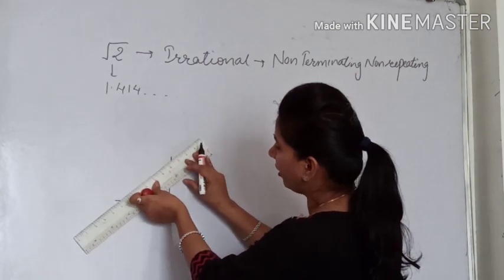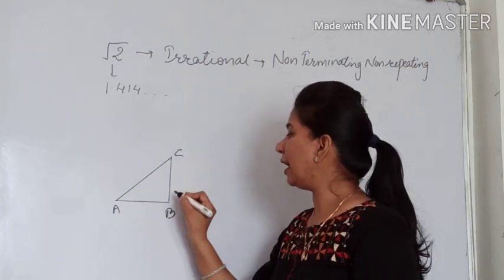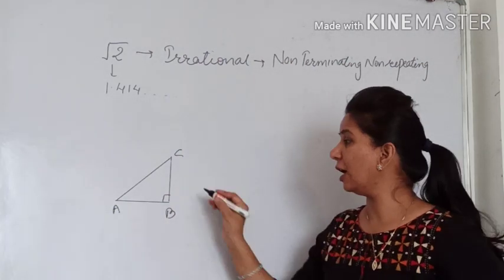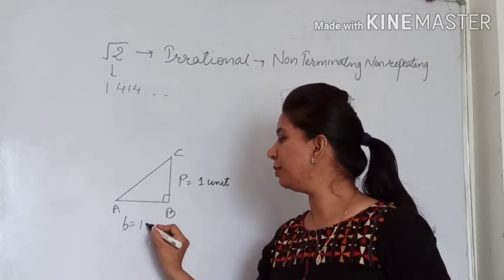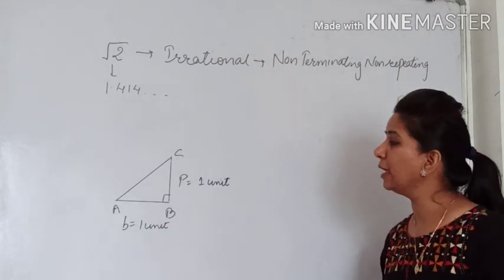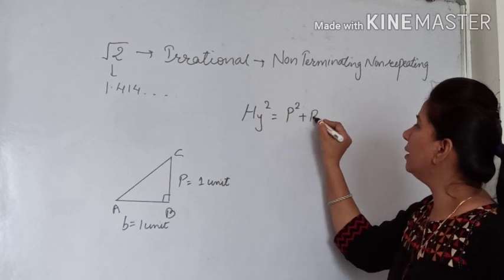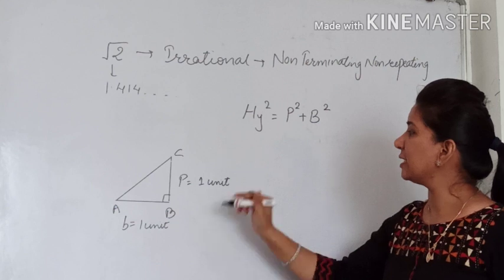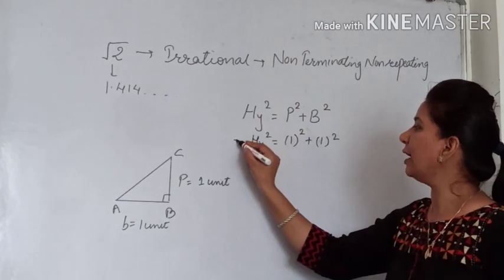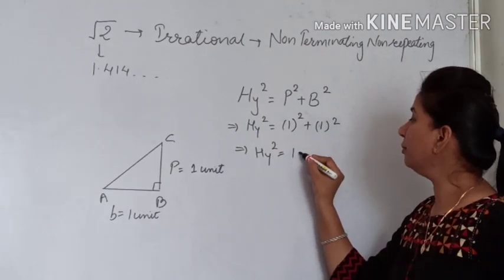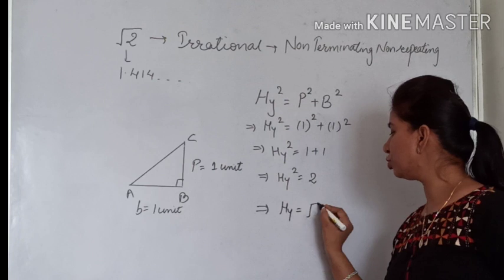First we have to make a right angle triangle. Let this be a right angle triangle A, B, C with the right angle at C — 90 degrees. Suppose the perpendicular is 1 unit and the base is also 1 unit. Then according to Pythagoras theorem, hypotenuse squared equals perpendicular squared plus base squared — that is 1 squared plus 1 squared — which gives us 1 plus 1 equals 2, so hypotenuse equals root 2.